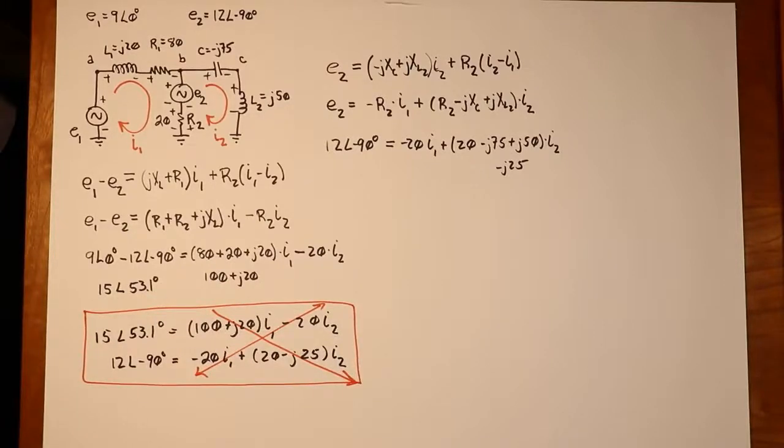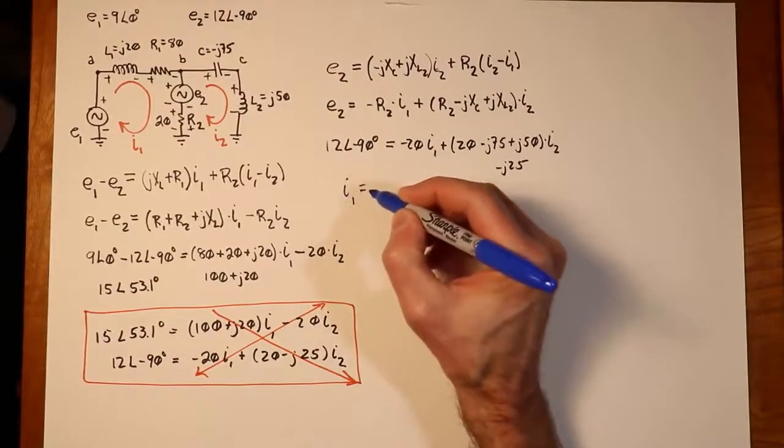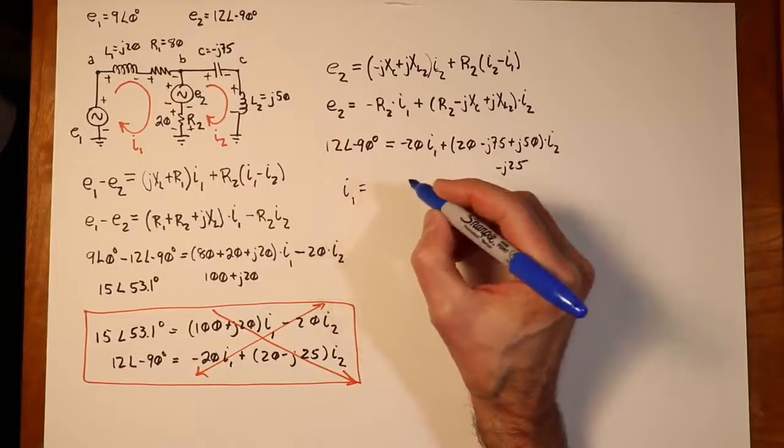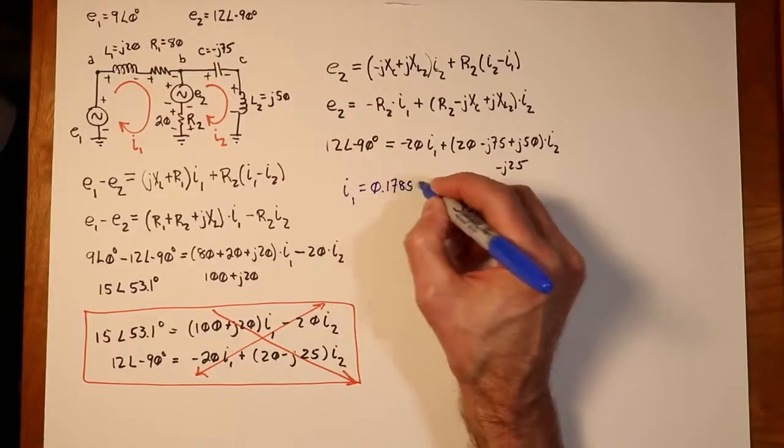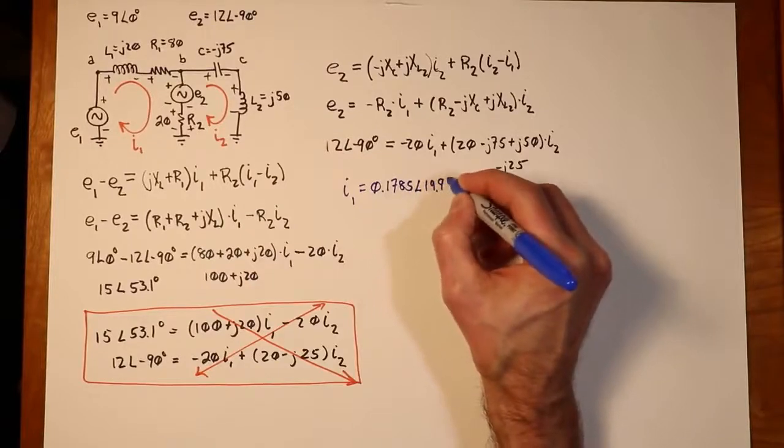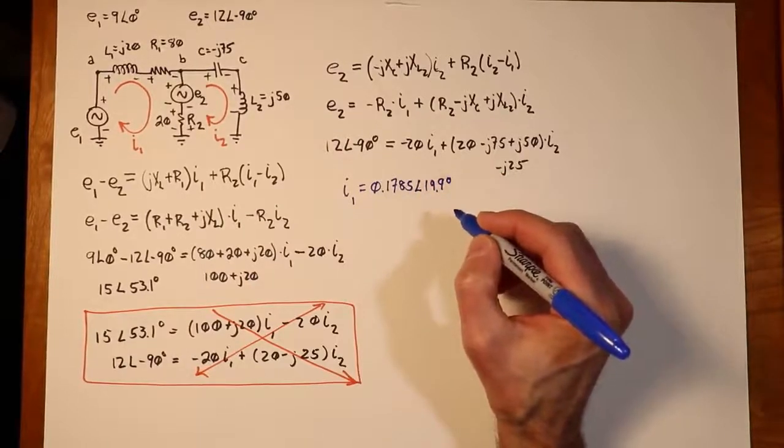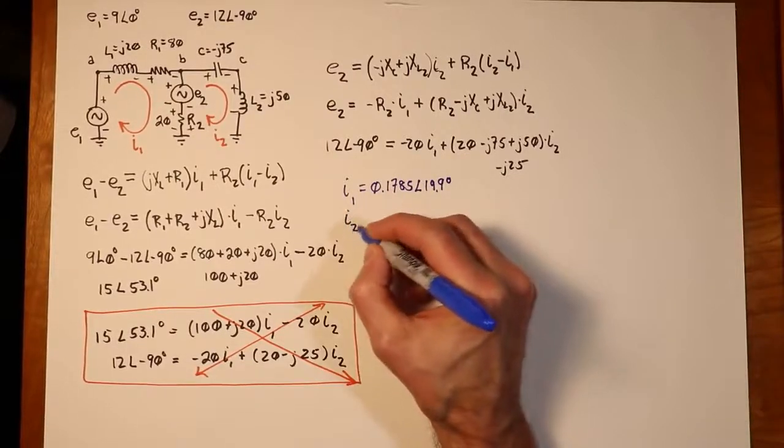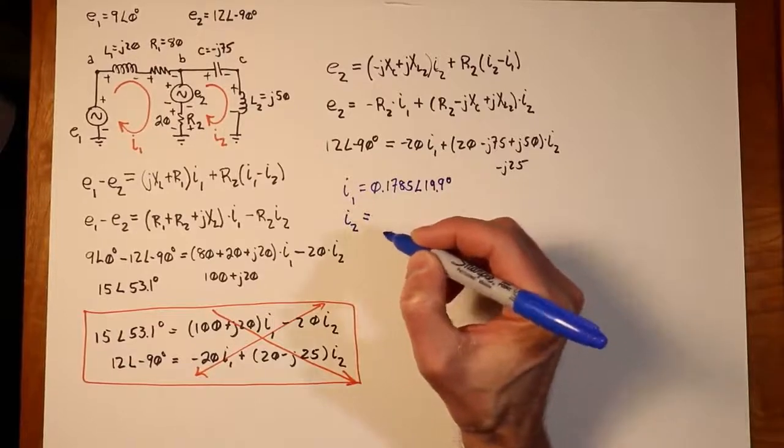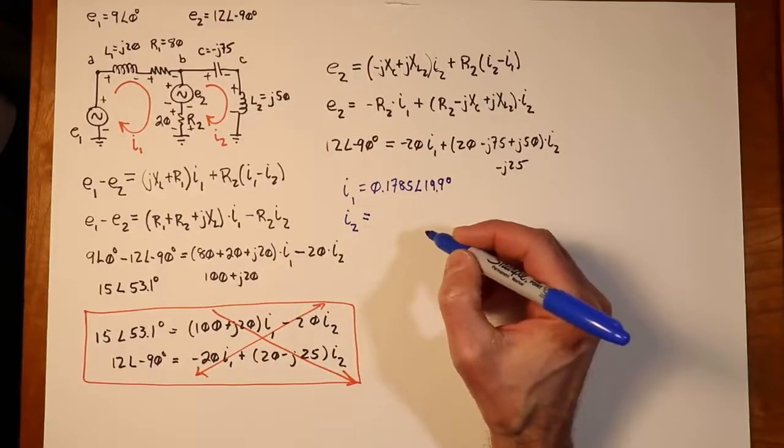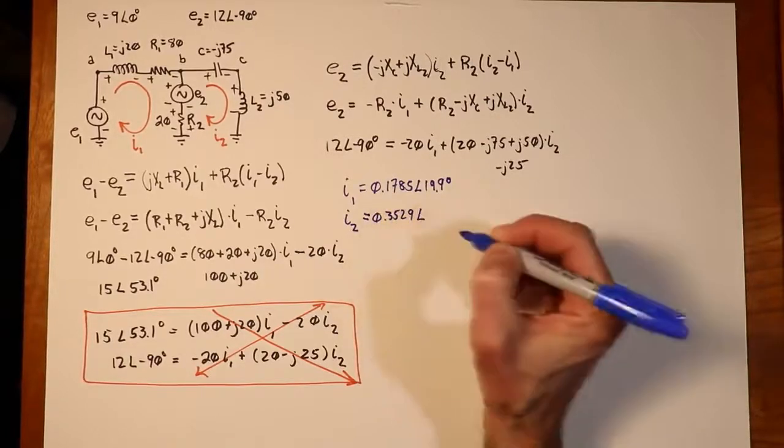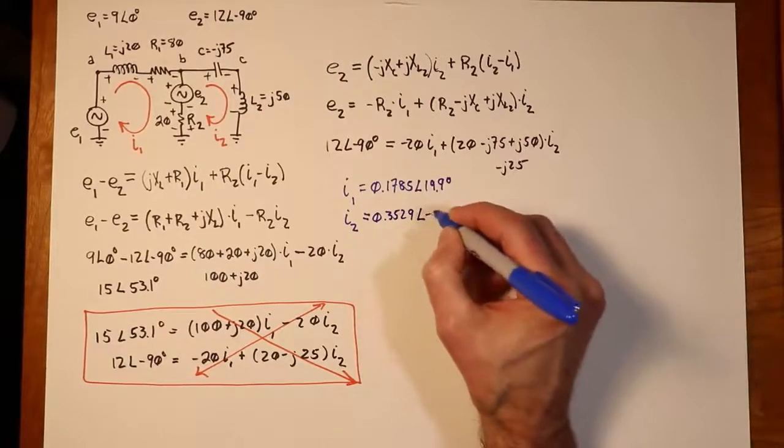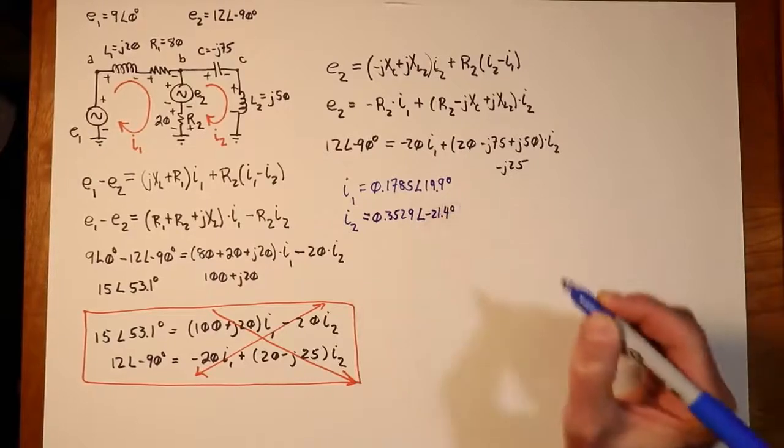And we would come up with two currents. So, turns out that I1 will work out to .1785 at an angle of 19.9 degrees. And the second current, I2, that works out to about twice the value, .3529 at an angle of negative 21.4 degrees.